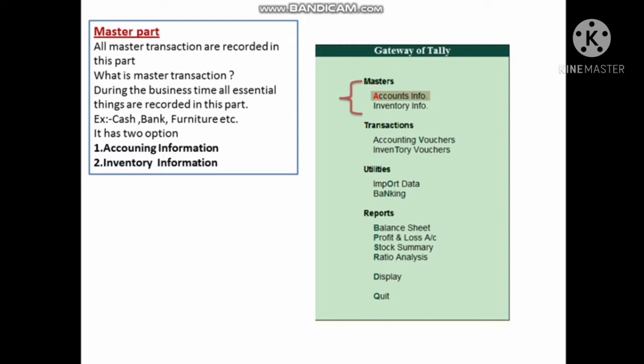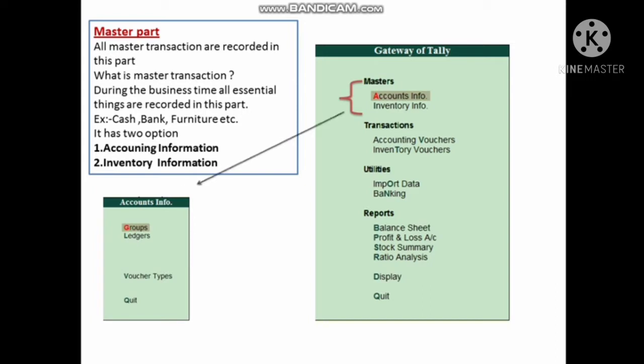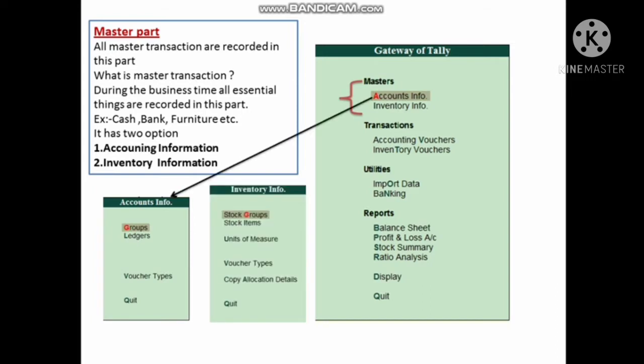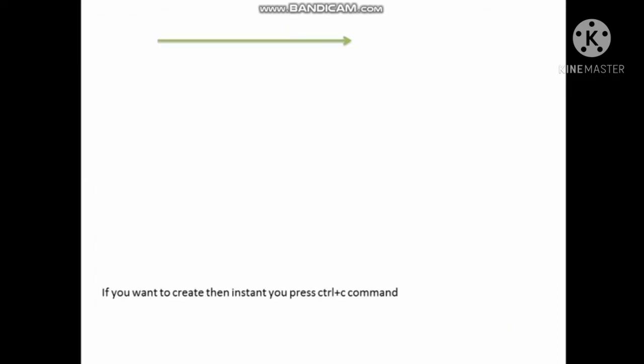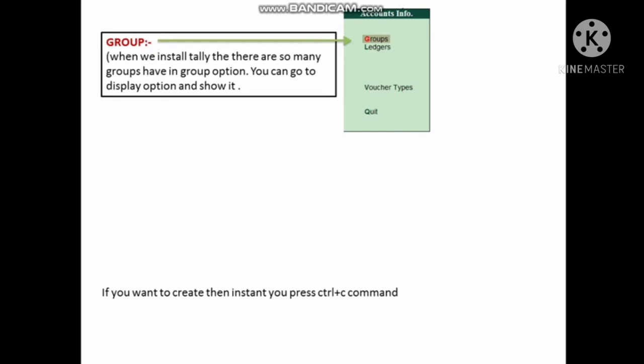The Master part is where all master transactions are recorded. During business, all essential things are recorded here — for example, cash, bank, furniture, sundry creditors, and sundry debtors. The Master part has two options: Accounting Information and Inventory Information.